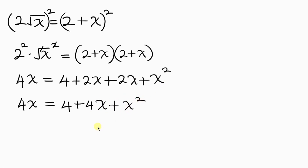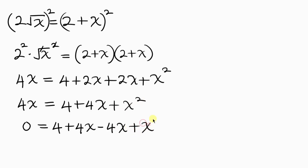Now we're going to move everything to one side. Moving 4x to join the right hand side leaves 0 on the left. So this gives 0 equal to 4 plus 4x, and as 4x crosses to the right it becomes minus 4x, plus x squared. So 4x minus 4x is 0, leaving us with 0 equal to 4 plus x squared.